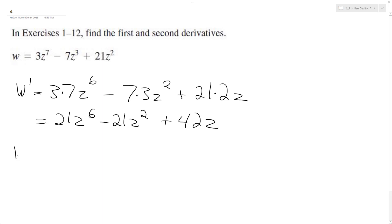Now I want to find my second order derivative, w double prime. So same thing: 21 times 6, z raised to the 5th, minus 21 times 2z plus 42.